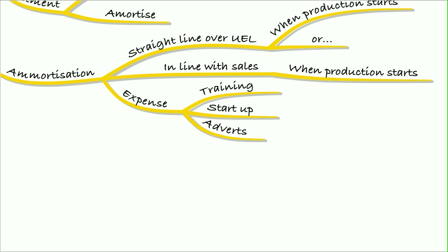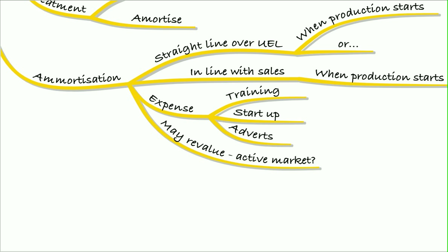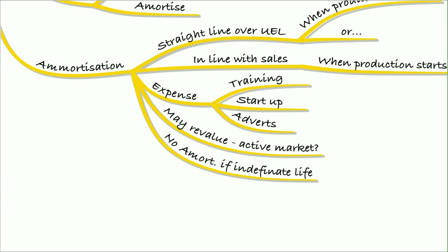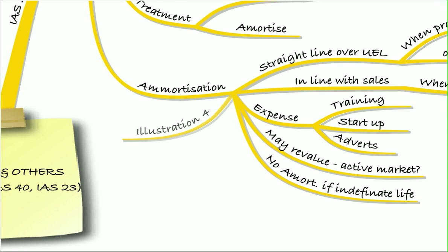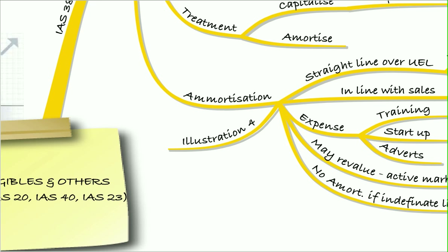Things that we definitely always expense: training costs, startup costs, and advertising costs — always expensed and not capitalized. We may revalue an intangible asset if there's an active market for it. If we assess the asset and think it has an indefinite life — i.e., we're not sure how long the useful economic life is — we don't amortize it, but we do test it for impairment each year. We covered all of that in illustration four.